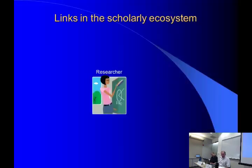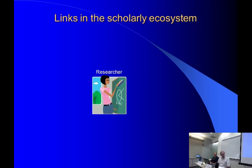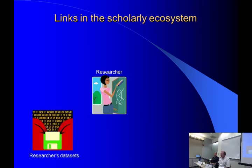I'm going to approach this from a theoretical background — the state of scholarship. In talking about an ecosystem of scholarship, at the center we have the researcher. This is the famous granddaughter of Albert Einstein, refining the formula probably. The researcher creates, over the course of their career, various data sets — whatever the output form may be: numeric data, video recordings, interviews, images of the sky.